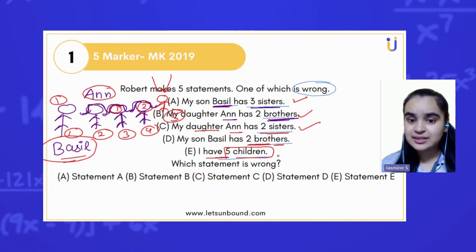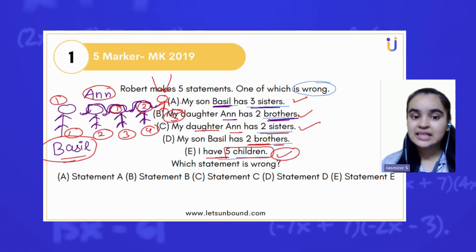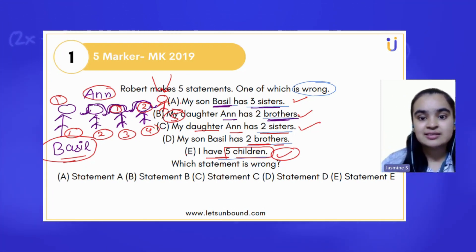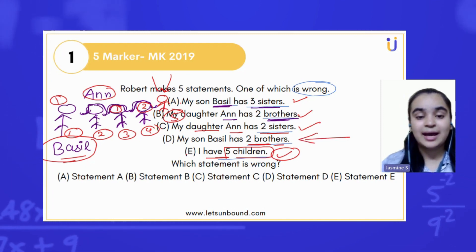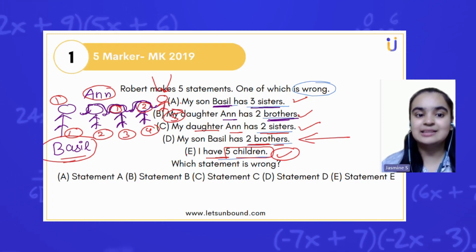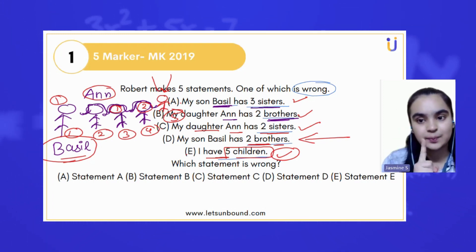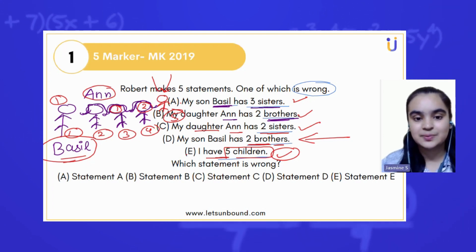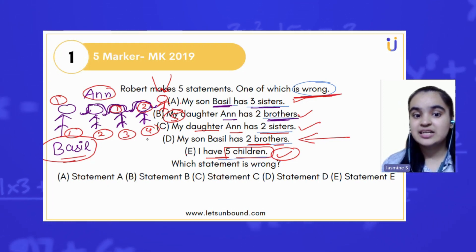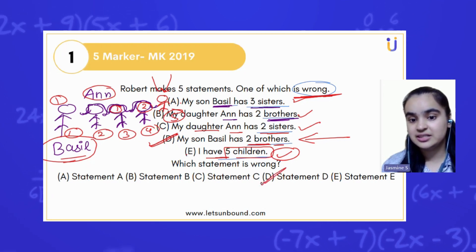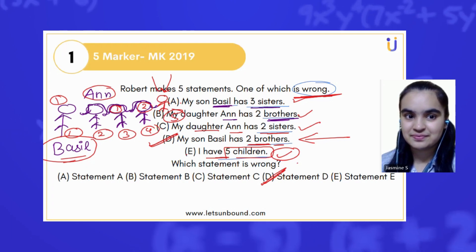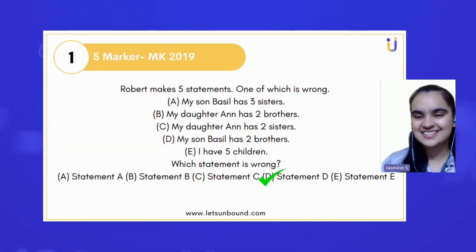So that means statements A, B, C, and E are correct — they are interrelated to each other. Whereas option D, which says my son Basil has two brothers, is wrong, because that does not make sense. Basil has only one brother. Hence, the wrong statement is D. Let's check our answer — and yes, it's option number D.